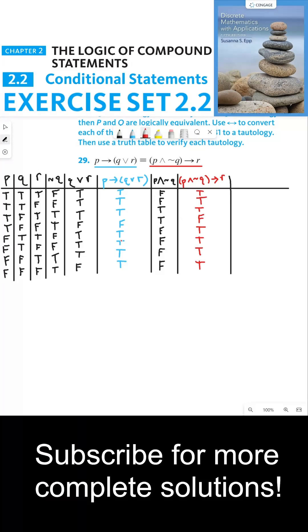From here, as you can see, the blue column has the same exact truth values as the red column, which we would normally say means these two statement forms are logically equivalent. But the directions ask us to take one more step, and that's to look at the biconditional between the blue and the red. The biconditional is true precisely when both statement forms have the same truth value, which is the case in every single row. So because this biconditional is always true, we say the biconditional is a tautology.